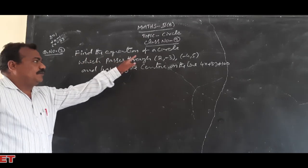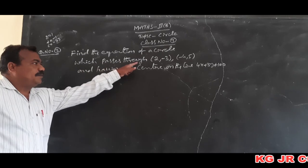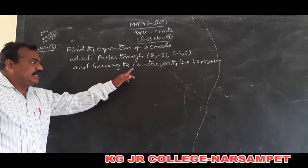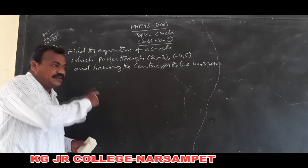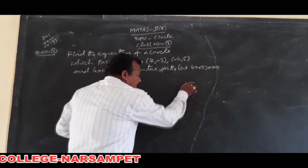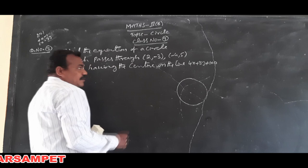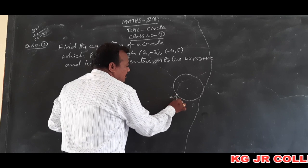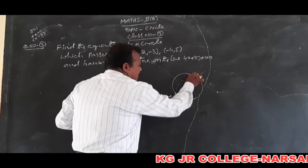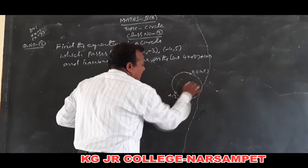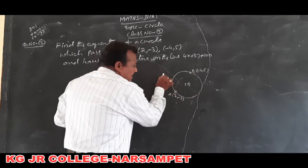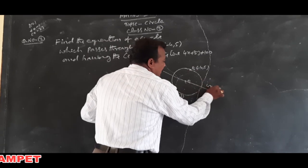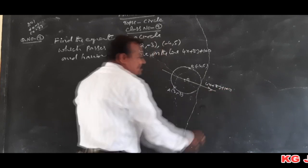Find the equation of a circle which passes through the points (2, -3) and (-4, 5), and having the center on the line. The circle is passing through point A (2, -3) and point B (-4, 5), and the center of the circle lies on the line 4x + 3y + 1 = 0.